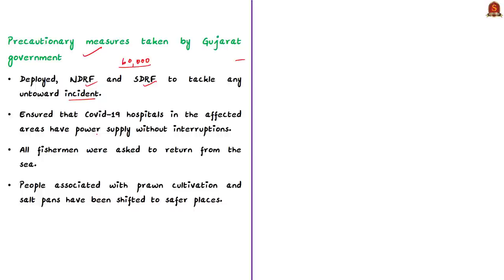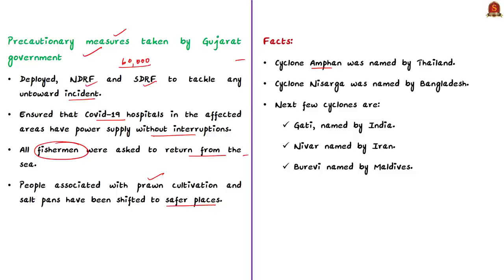The Gujarat and Maharashtra governments took several precautionary measures to minimize loss of human life and property damage. They ensured COVID-19 hospitals in affected areas had uninterrupted power supply and issued advance warnings to fishermen. People associated with prawn cultivation and salt pans were shifted to safer places. Cyclone Ampan was named by Thailand and Nisarga was named by Bangladesh. Upcoming cyclones already named include Gati by India, Nivar by Iran, and Burevi by Maldives.